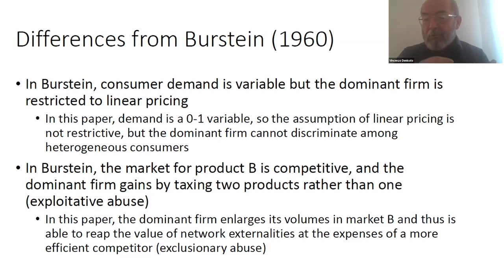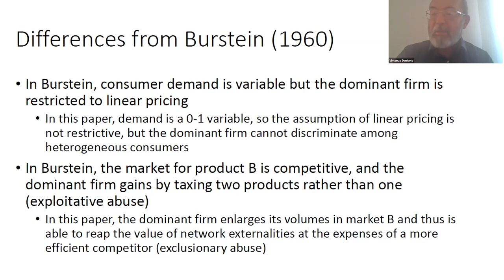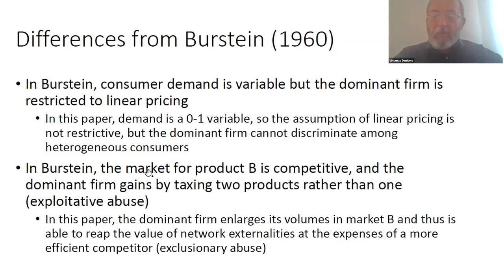The most important differences, in my opinion, are in the way this unexploited consumer surplus is leveraged in market B. What Bestin has is basically a model similar to optimal taxation — by tying, the dominant firm can tax with a positive price-cost margin two goods or N goods instead of one, and we know that taxing more goods tends to be more efficient. So it is basically a kind of exploitative abuse, which in the U.S. I understand would not constitute abuse. Whereas in this paper, a more efficient competitor is evicted because it is denied the scale which allows it to exploit the network externalities.